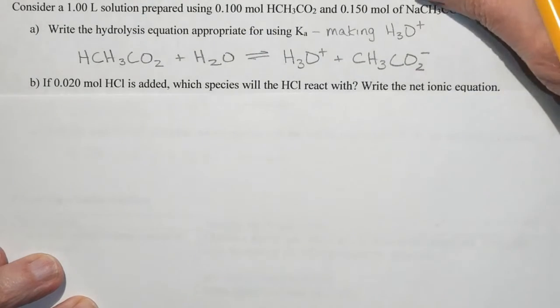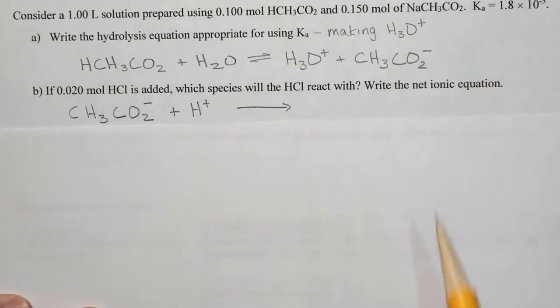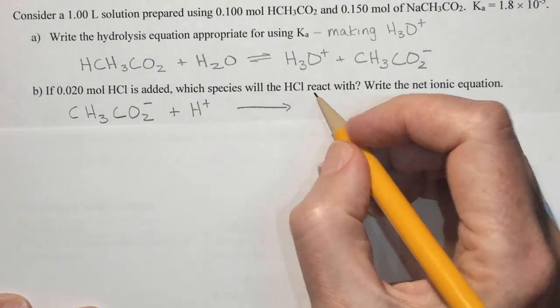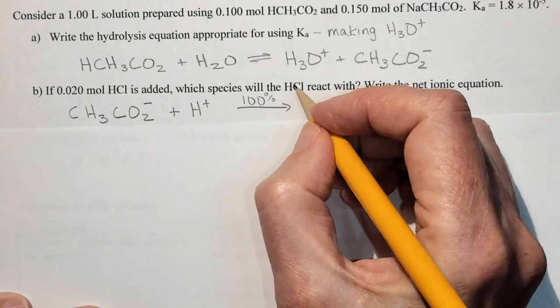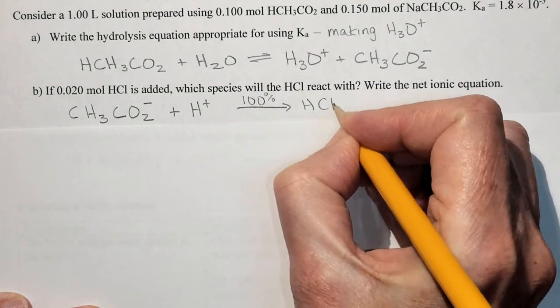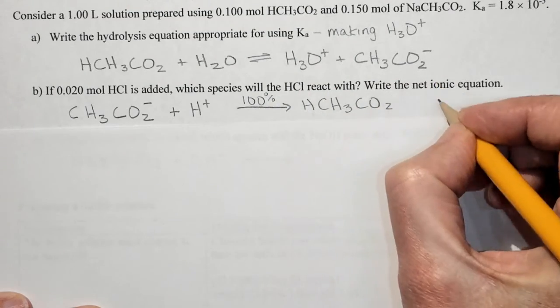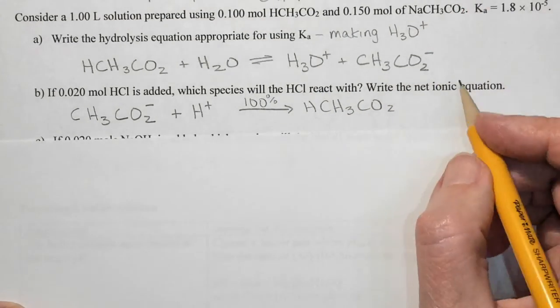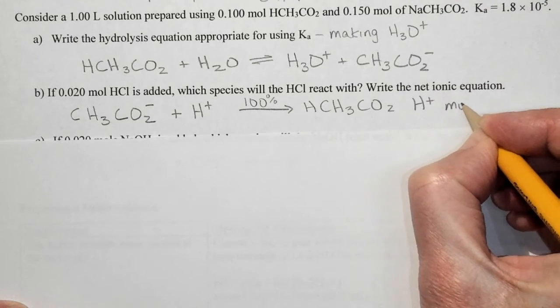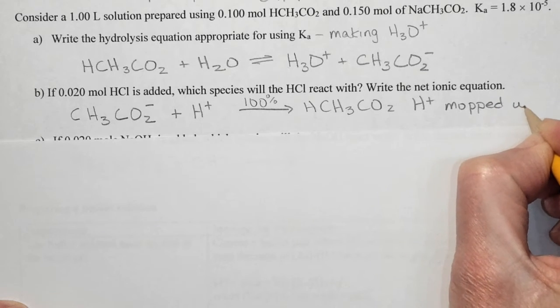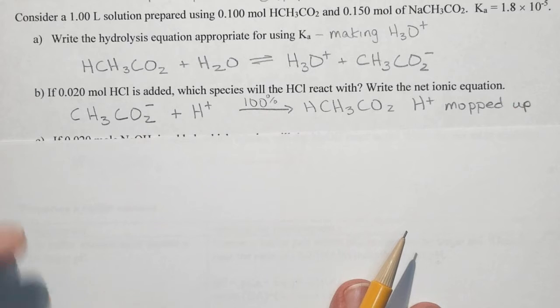Well it's going to react with the acetate ion and so we're going to have this 100% reaction and we will produce the acetic acid again and what's happened is we have mopped up the H plus. And this is actually the term we use, mopped up.